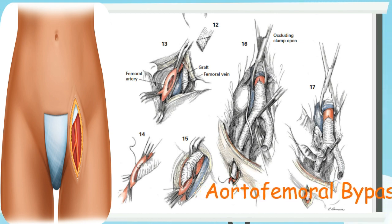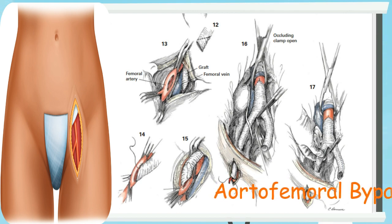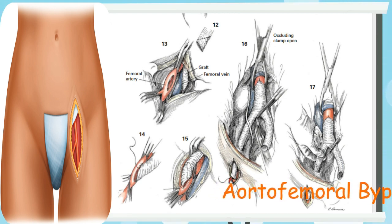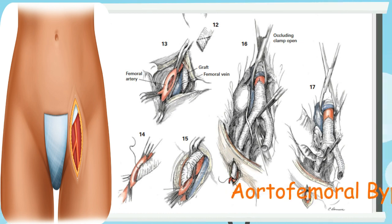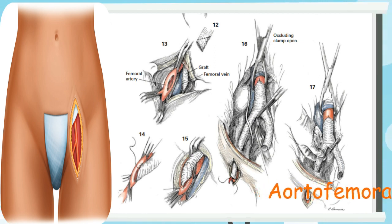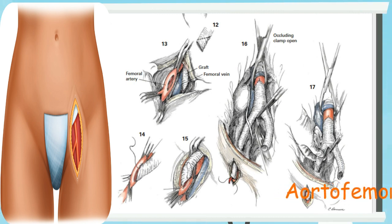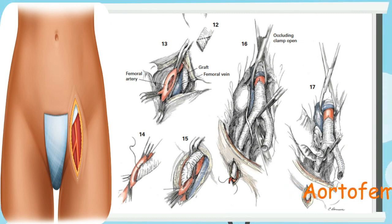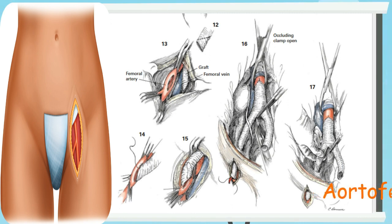A linear arteriotomy is made; it is not necessary to excise a button of artery wall. The anastomosis is carried out in the same manner as the upper end-to-side anastomosis of the graft to the aorta, as shown in Figures 14 and 15. Just before completion of the femoral anastomosis, a clamp is placed on the opposite iliac limb of the graft and across the right common iliac beyond the bifurcation. The aortic clamp is opened momentarily to allow any potentially clotted material to be flushed out from the graft, Figure 16. The clamp is replaced and the anastomosis is completed, then the aortic clamp is removed with secure digital compression of the graft to ensure a gradually increased flow to the limb, Figure 17. The limb is slowly allowed to fill so that hypotension does not occur.